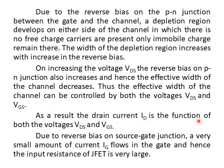As a result, the drain current ID is a function of both the voltages VDS and VGS. Due to reverse bias on the source-gate junction, a very small amount of current IG flows in the gate. And hence the input resistance of JFET is very large.